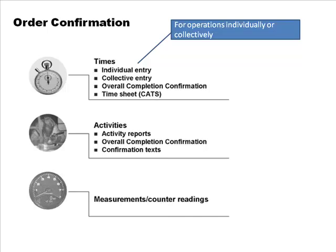For order confirmation, you can enter times through individual entry — for each maintenance item separately — or through collective entry, where you enter times for all items in one screen. You can also enter one completion confirmation for the entire order. There is also a mechanism called the Cross Application Timesheet, or CATS, which is used across the system — for example, for entering production confirmations, and in HR for people to report weekly activity times. It is a very generic tool that cuts across several applications.